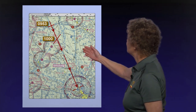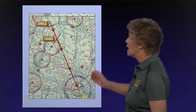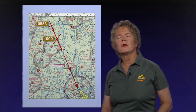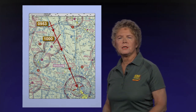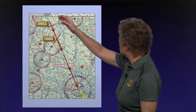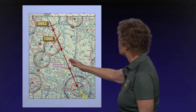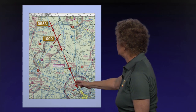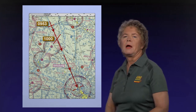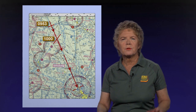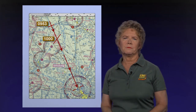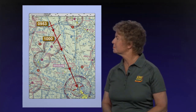Let's take a look at this chart. We're going to be flying southeast bound on this airway, which is Victor 185, and we're headed southeast bound into the Savannah VOR.